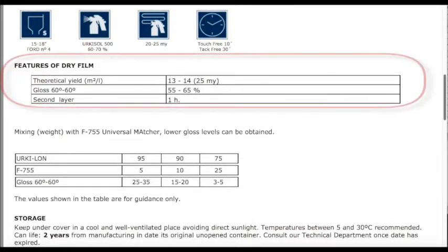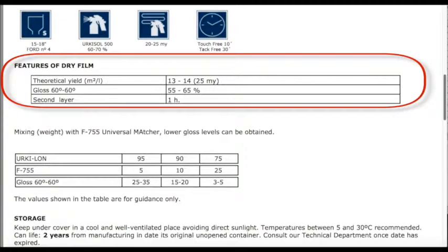Next down, we have the Features of the Dry Film. This is about how much paint you'd need, the coverage of the paint. It has theoretical yield, measured in meters squared per liter. We won't get too technical about this, but you need to know this if you want to work out how much paint you need for a particular area. In this case, it's saying 13 to 14 square meters per liter of paint at a dry-film thickness of 25 microns.